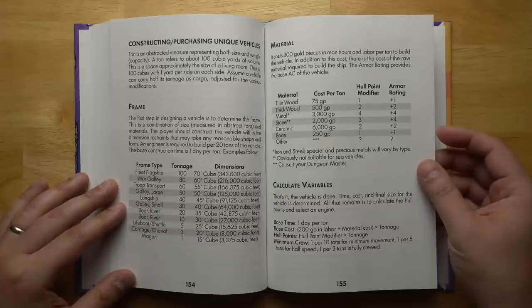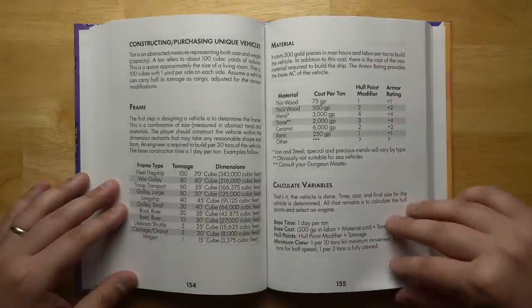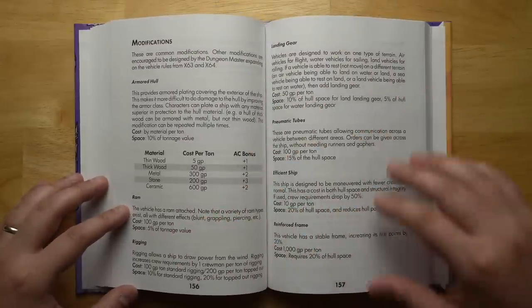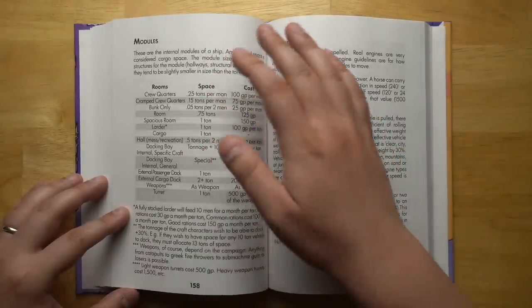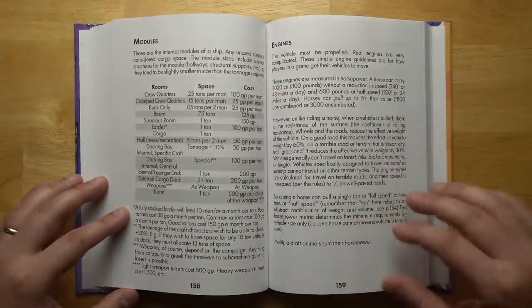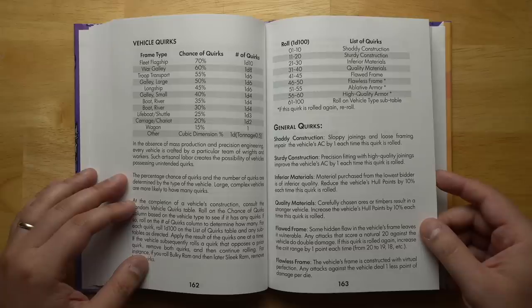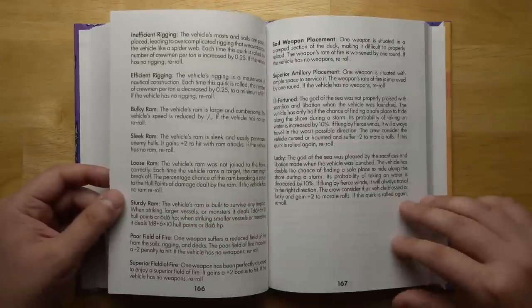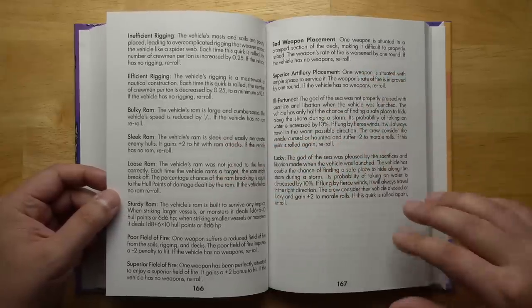There's also a whole system in here for crafting your own unique vehicles. You get the original frame with the tonnage attached to it, then you can modify that with different kinds of material. You can add modifications like rams, rigging, pneumatic tubes, reinforced frames. Modules to add on like docking bays or bunks, turrets, different types of weapons, engines depending on how you want to drive it. There's also a whole section of vehicle quirks that your ship or vehicle may acquire. These could be good things or bad things, anything from a sleek ram to a loose ram, ill-fortuned or lucky.